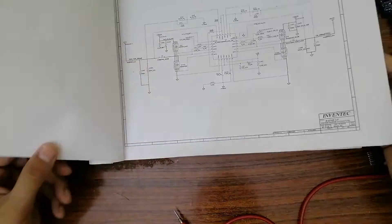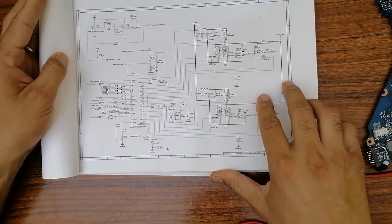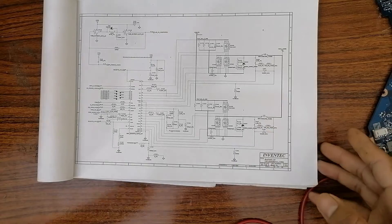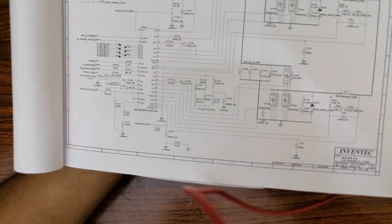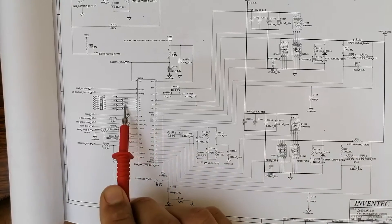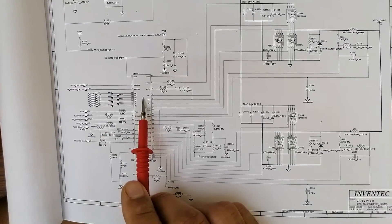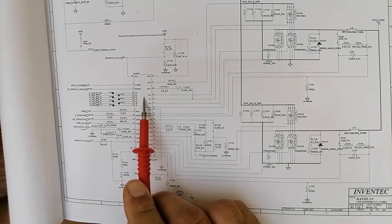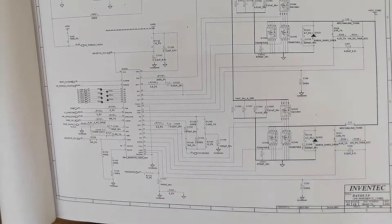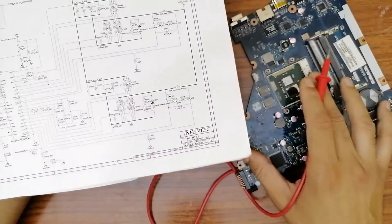Now let's look at the CPU circuit. The CPU circuit has basically two channels. Here we have the first channel and here we have the second channel. In order to generate VCC core, the CPU receives an ID signal, and based on this ID the IC generates the exact voltage necessary for the CPU. Let's study the CPU circuit in the schematic and then find it on the board.